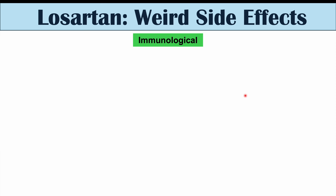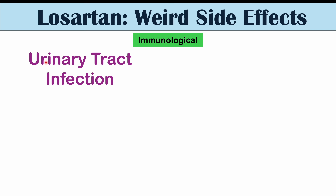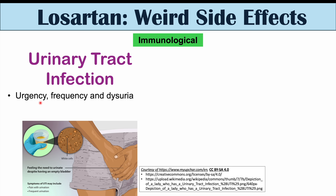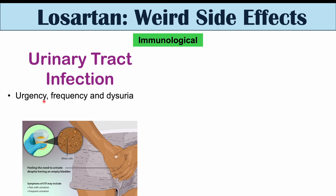Moving on to immunological side effects, we can see a higher rate of urinary tract infections in patients who take Losartan. Key symptoms include urgency — the feeling that you need to urgently urinate — urinary frequency, and dysuria, a burning sensation when urinating. The reason Losartan increases UTI risk is not entirely known; around 10% of patients may experience this. It may be due to effects on urinary excretion, or it could be a selection bias, as older patients are more likely to get UTIs and are also more likely to be taking Losartan.